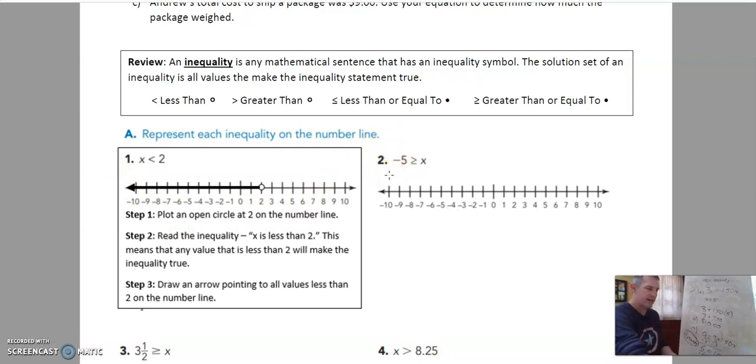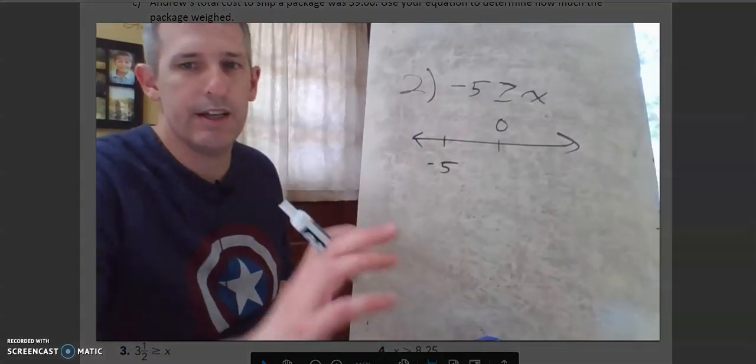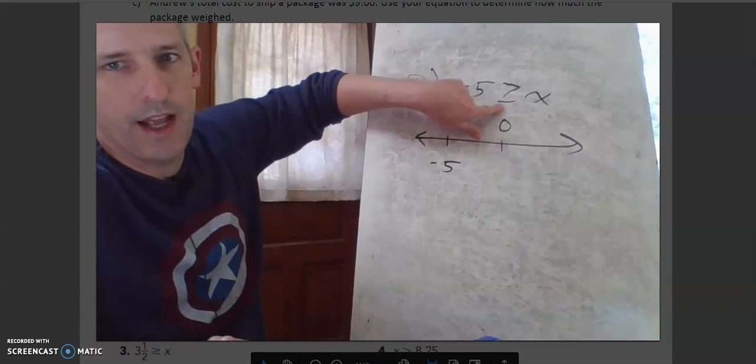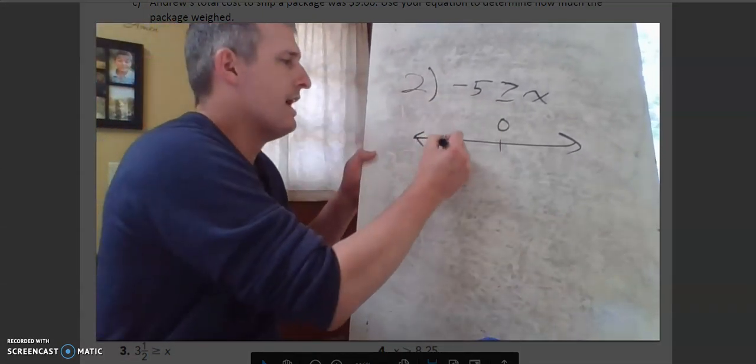Okay number two. Negative five is greater than or equal to x. So what I want to do is I want to put zero here and then my negative five the number that I'm going to be most interested in is right here. Okay and then I'm going to put a circle or a dot on negative five. Now in this case it has the or equal to sign. So that means it could be negative five. So I'm going to put a dot there.